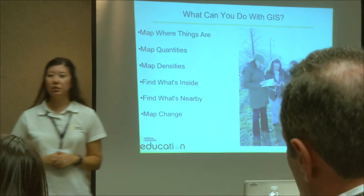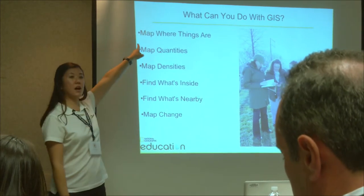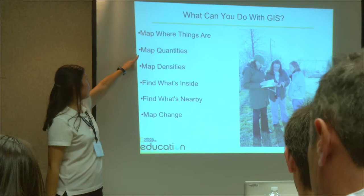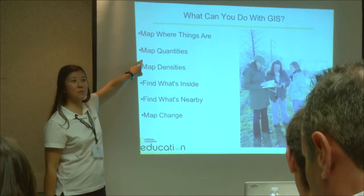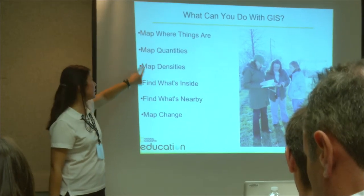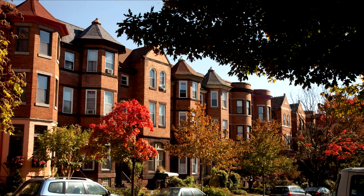Here are some of the things that you can do with GIS. Obviously you can map where things are, but you can also map how much is there. So you can map populations and you can map densities. A really popular thing in Maryland would be to show where people live — where is the population in Maryland — and that's generally along the I-95 corridor in Maryland.